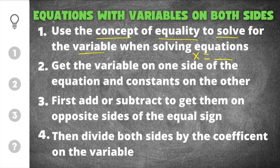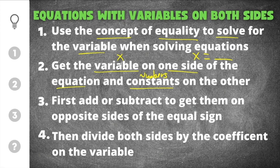In order to get that, you're going to get the variable on one side of the equation and constants on the other. The variable just means x or any letter that represents a number, and constants are just numbers. You're going to want the variable on one side equal to a number on the other side. In order to do that, you're going to first add or subtract to get the variables and the constants on opposite sides of the equal sign.